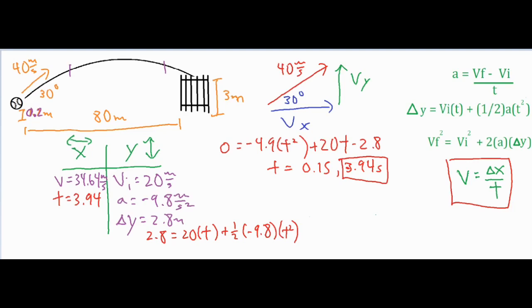Using this formula, velocity equals delta X over t, so velocity times time would equal my delta X. If I take my horizontal velocity of 34.64 and multiply that by the time, that's going to give me 78.8 meters.